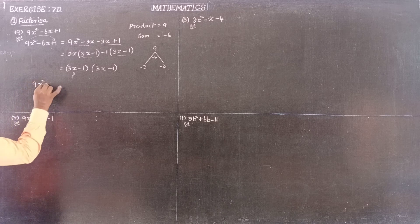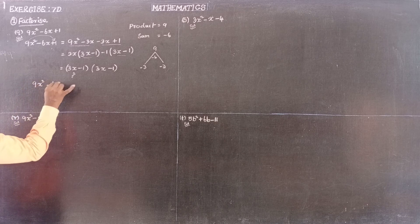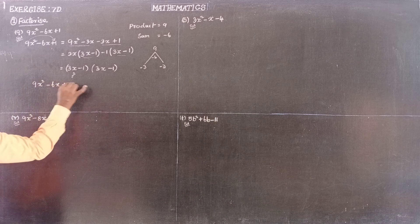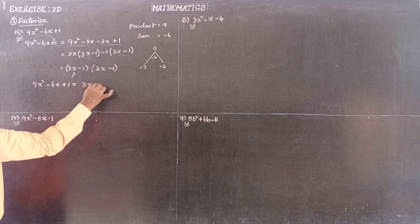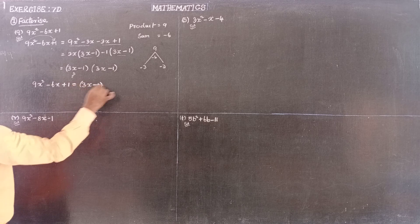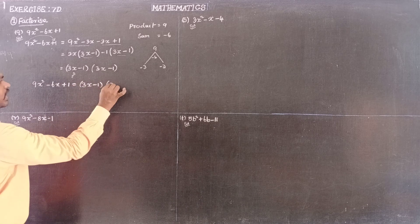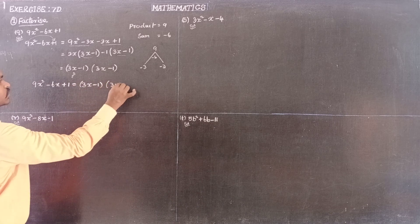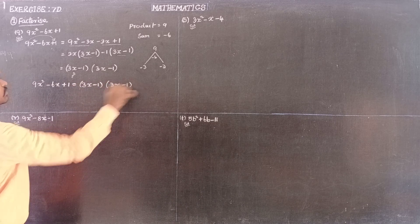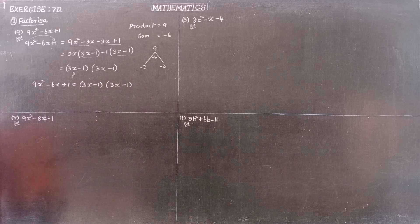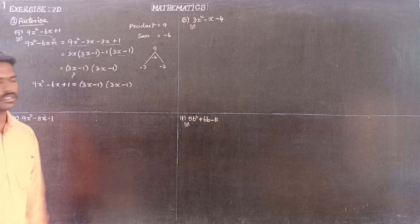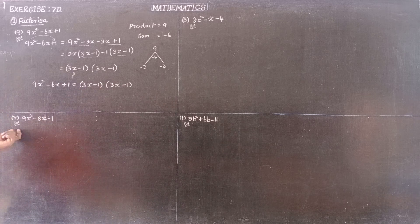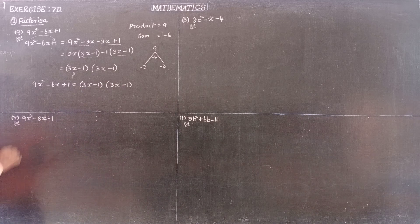Therefore, 9x squared minus 6x plus 1 is equal to (3x minus 1)(3x minus 1). Both factors are 3x minus 1.